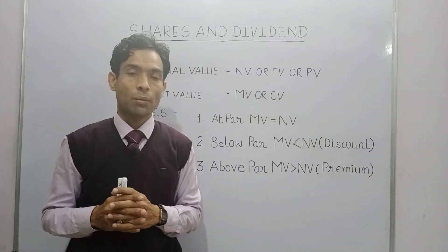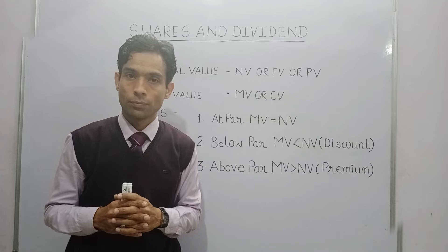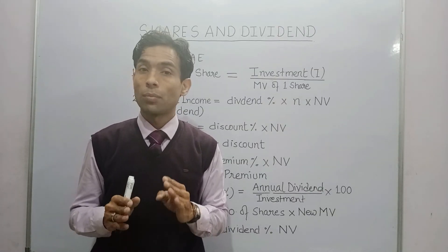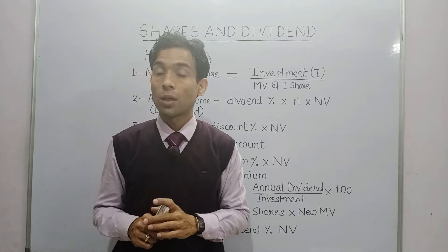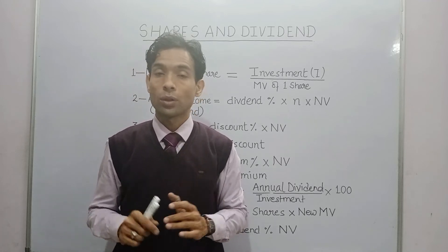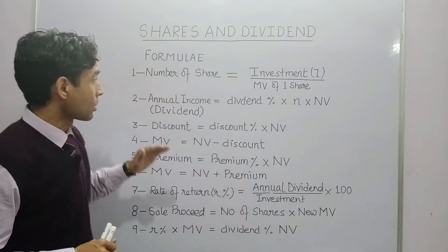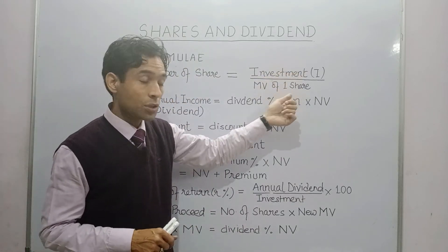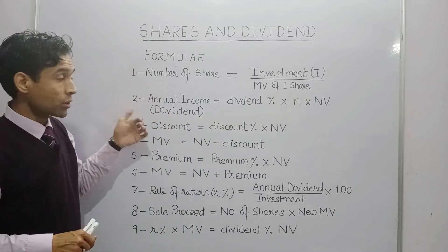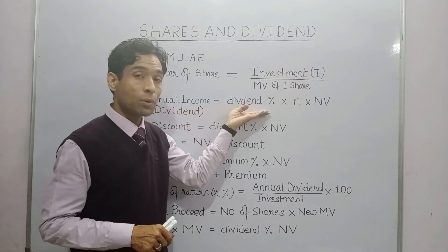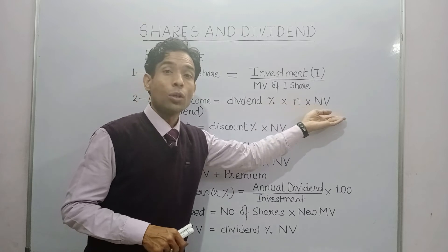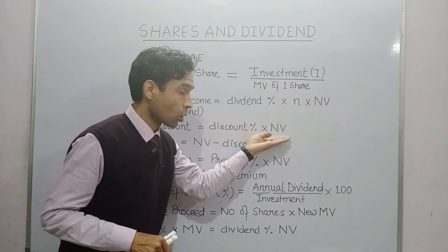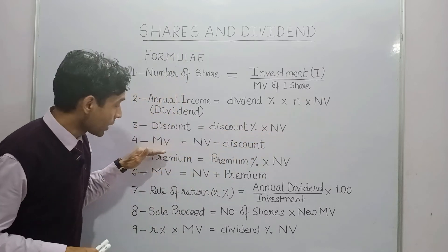Now let us learn the formulas for this chapter. The book gives three to four formulas, but I am going to give you five more which are very important. Formula one: number of shares = investment divided by market value of one share. Formula two: annual income, also called dividend = dividend percent × number of shares × nominal value.